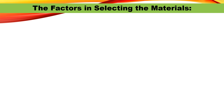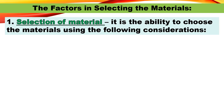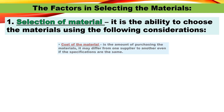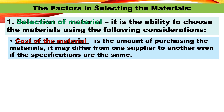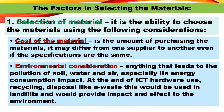Now we have the factors in selecting the materials. Number one is the selection of material — the ability to choose materials using the following considerations. The first consideration is the cost of the material, which is the amount spent on purchasing the materials. It may differ from one supplier to another even if the specifications are the same. Next is environmental consideration: anything that leads to pollution of soil, water, and air, especially its energy consumption impact. At the end of ICT hardware use, recycling and disposal such as e-waste would end up in landfills, providing impact and effect to the environment.